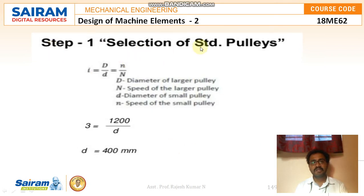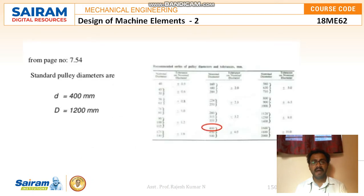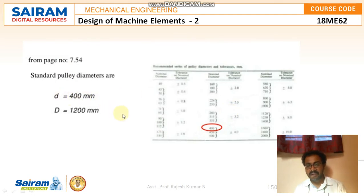Step 1: Selection of standard pulleys. Using the formula i = D/d = N/n, since the transmission ratio is known, 3 = 1200/d, so d = 400 mm, which is the diameter of the smaller pulley. From the standard pulley diameter table, d = 400 mm and D = 1200 mm are finalized.